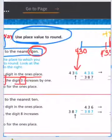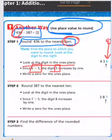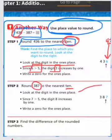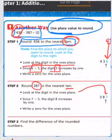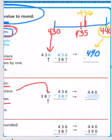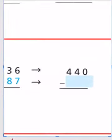So that's step 1, and now we can go to step 2, rounding 387 to the nearest 10. Again, look at the digit in the ones place, which is the 7, and the 7 is greater than 5, so the digit 8 increases by 1, meaning 387 is closer to 390.